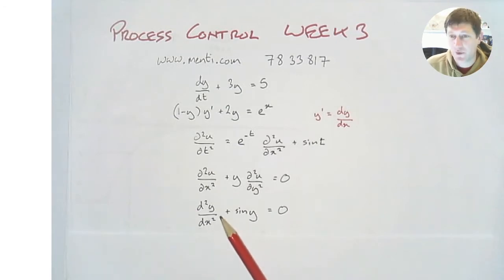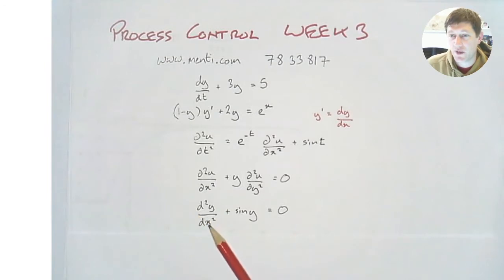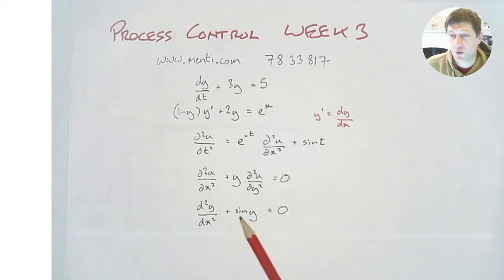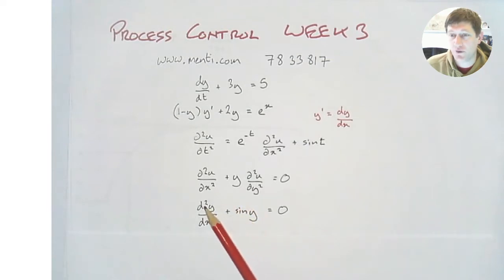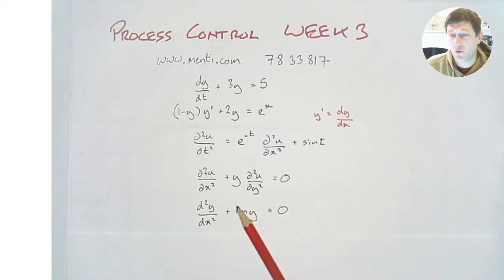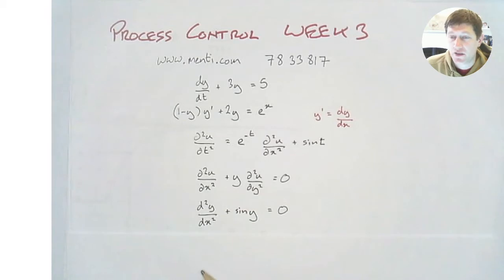A final example: we can see it's second order. We can see we have a total differential here, so it's a second order ordinary differential equation. And here we have a term sine y — we're solving for y, and sine y is a non-linear term of y, so it's not linear in y. So it's a second order non-linear ordinary differential equation.